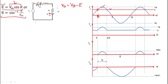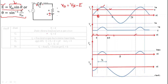We can understand the operation of this circuit in four angular slots: first from 0 to θ, then from θ to π-θ, then π-θ to π, and finally π to 2π.